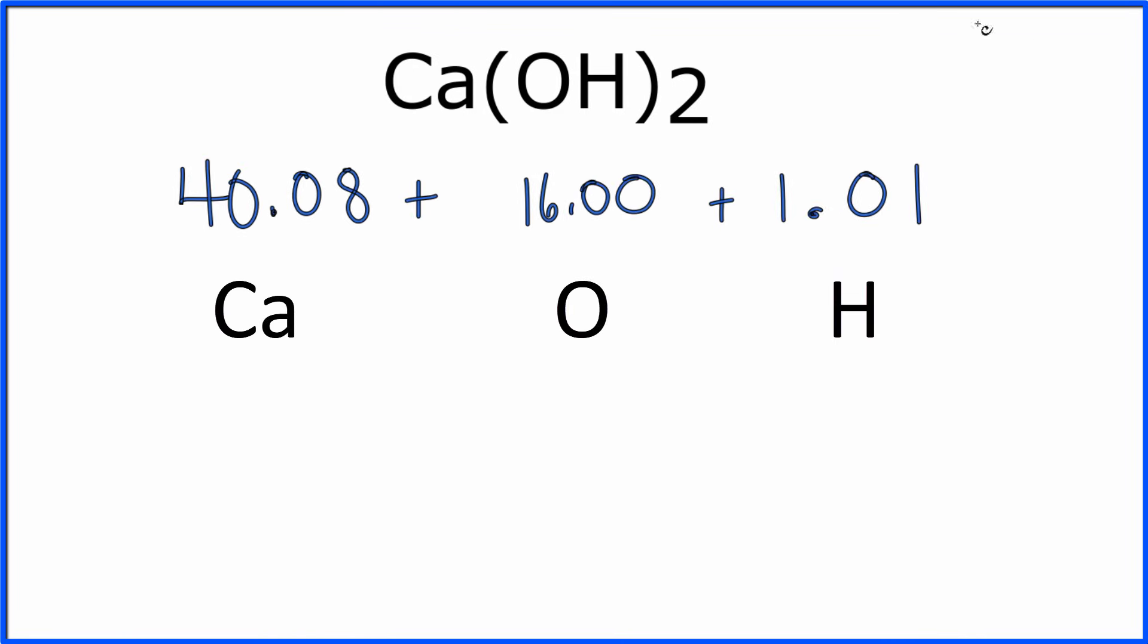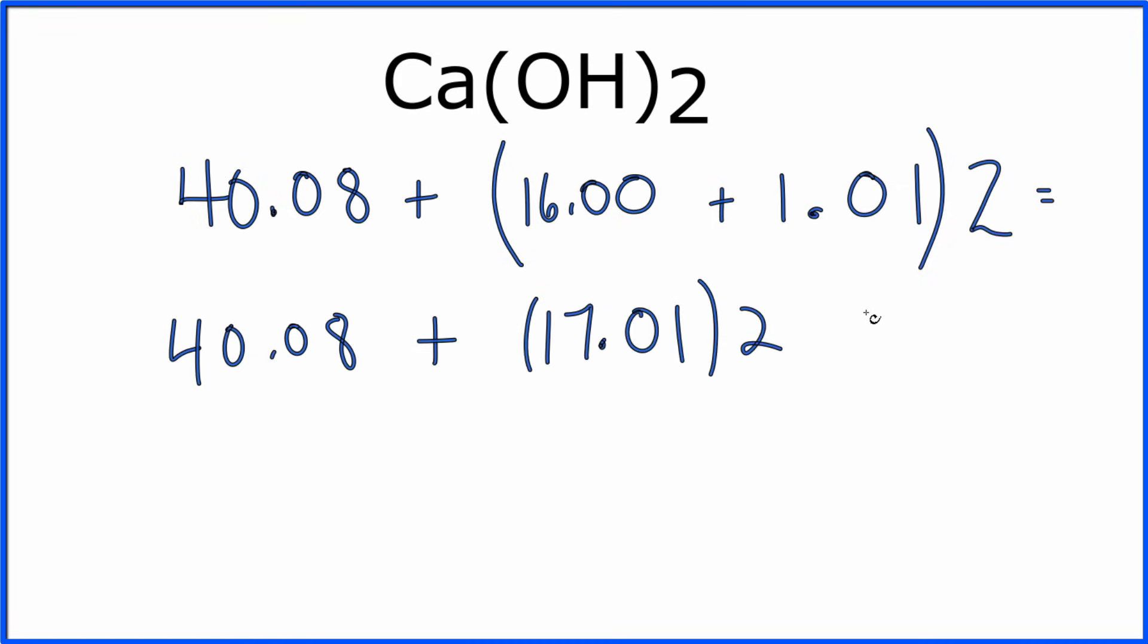And then I'll put the parentheses around the elements, just like they show up in the formula. And because I have this 2 right here, I'm going to multiply everything by 2. Once I do that, I then have 40.08 plus 17.01 times 2. And then I'll just add these two numbers together to get the molar mass for calcium hydroxide, Ca(OH)2.